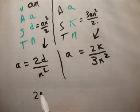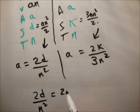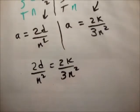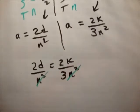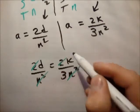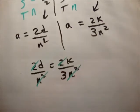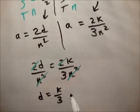So we go 2d over n squared is equal to 2k over 3n squared. What can we do? We can cancel the n's, or the n squareds, and the 2s. So we get d is equal to k over 3, or 3d is equal to k.